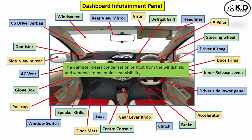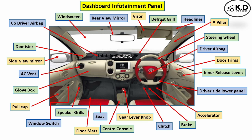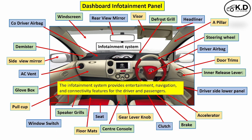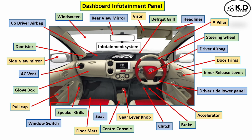The next part is the demist grill. Its function is similar to the defrost grid — it cleans the windshield as well as the side window from fog and condensation for better visibility. The last part in this section is the infotainment system, whose function is to provide entertainment, navigation, and connectivity of parts. These are the major parts of the instrument panel.